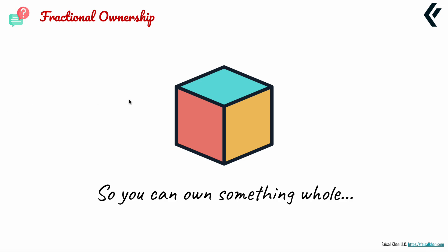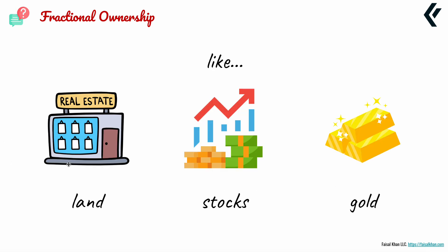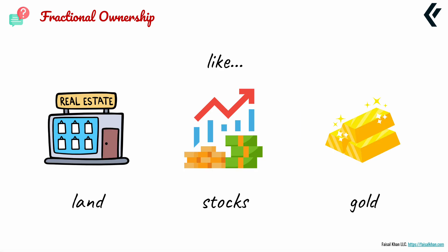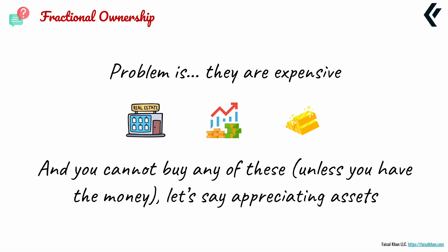We all know you can own something whole — you can go buy a car, a gold bar, a house, a yacht, or a stock certificate. Land, stocks, gold — these are all great assets for investment. The problem is they're expensive. Who doesn't want to own real estate, stocks, or gold? But if you look at your pocket, you may not have the money for all that. You cannot buy any of these unless you have the money.